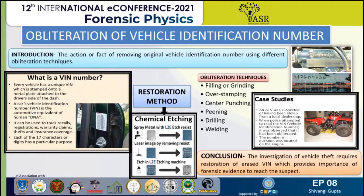Now, how are VIN numbers obliterated? There are different techniques used for the obliteration of the vehicle identification number. The VIN is present on the vehicle and is unique for each vehicle, through which identification is done when further investigation is carried out if any vehicle has been stolen or has been included in any crime.